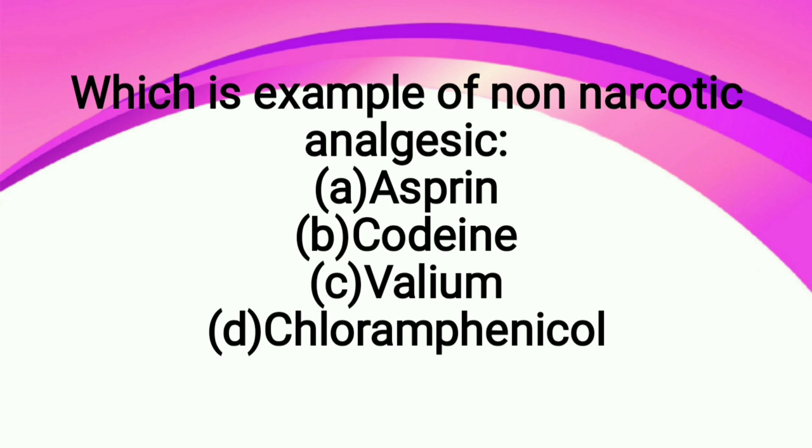So the correct answer is aspirin. Analgesics are of two types: one is narcotic and the other is non-narcotic. Non-narcotic ones act at the site where prostaglandins or hormones that cause pain sensation are present. They go and block the sites where molecules attach, so we don't get the pain sensation. These are non-narcotic analgesics.